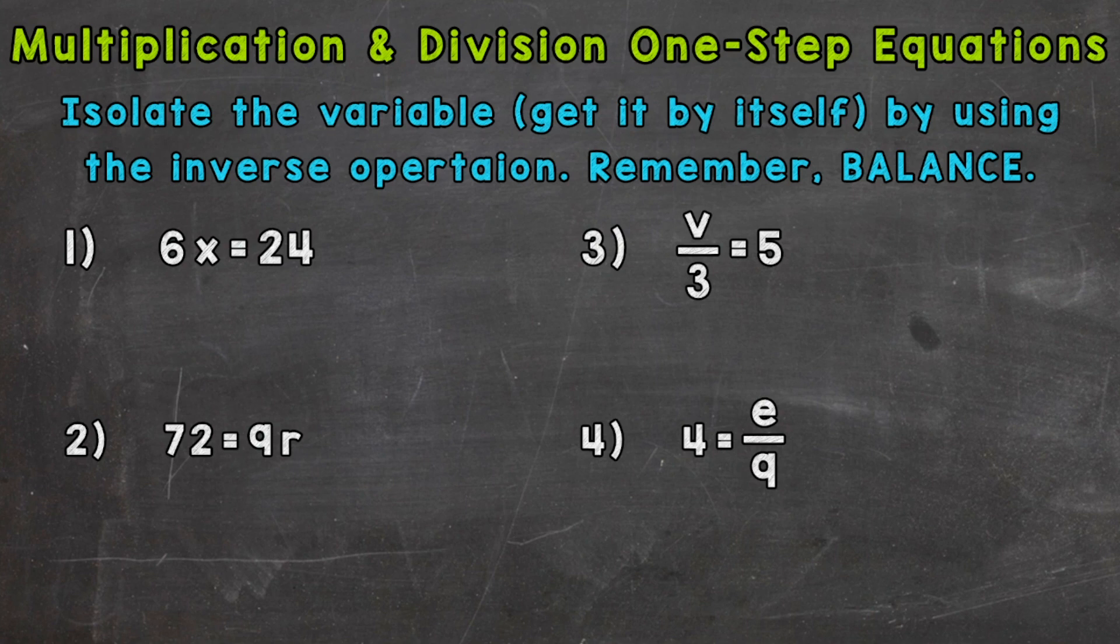Now you may be able to solve some or all of these using mental math, but we're going to go through these using a process. Knowing and understanding this process will help solve equations that are more complex and won't be able to be solved using mental math. So at the top of the screen is a very important note. We need to isolate the variable, get it by itself, by using the inverse or opposite operation. And always remember balance. So let's see exactly what that means as we go through our four examples.